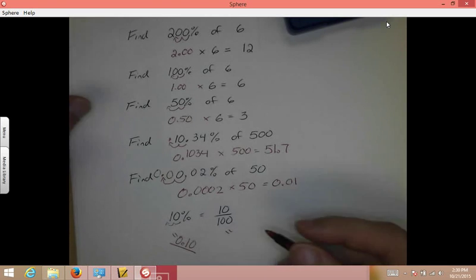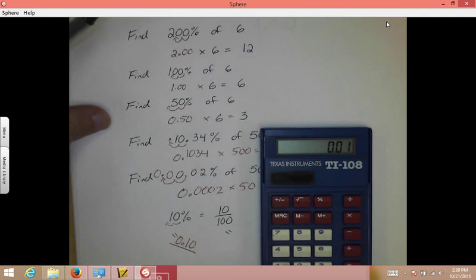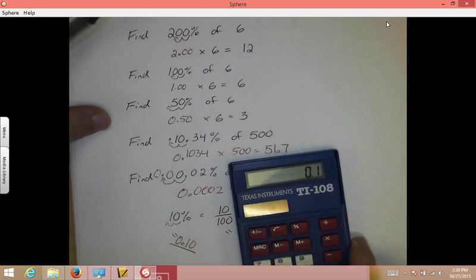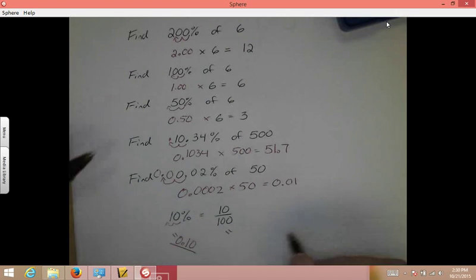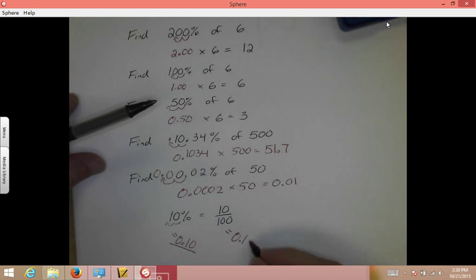If instead, you use your calculator and you divide it, 10 divided by 100, 0.1. And we know we can always add a 0 to the end of any decimal. So, look at that. Same number either way.